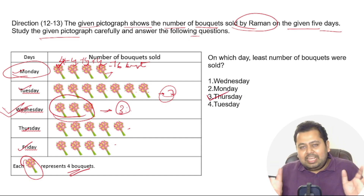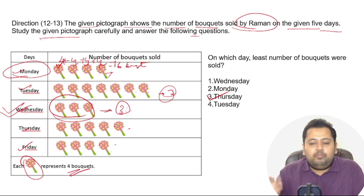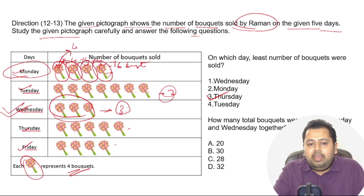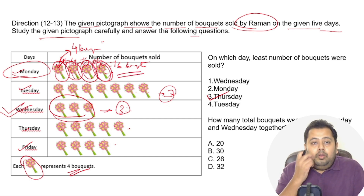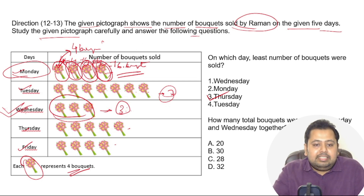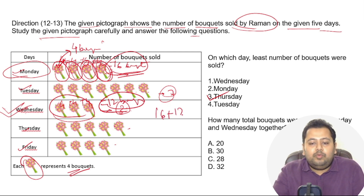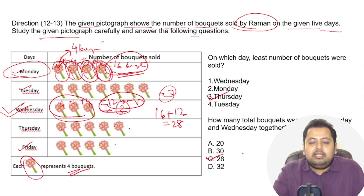The second question: how many total bouquets were sold on Monday and Wednesday together? On Monday, four images times four bouquets each equals sixteen bouquets. On Wednesday, three images times four equals four plus four plus four — that is twelve bouquets. So Monday and Wednesday together: sixteen plus twelve equals twenty-eight bouquets. The answer is C.